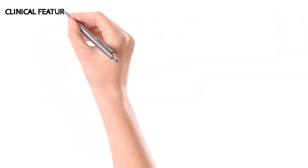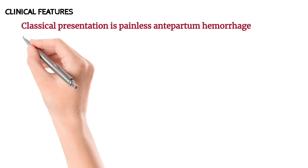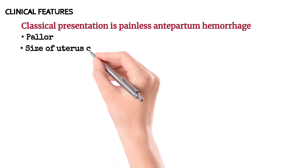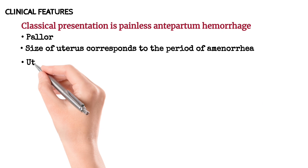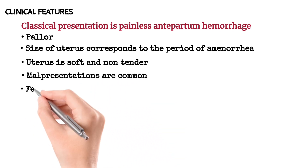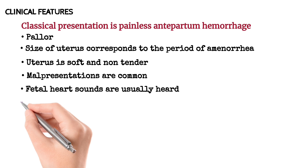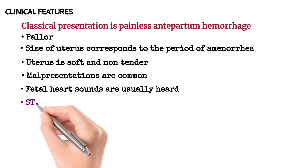The classical presentation of placenta previa is painless antepartum hemorrhage. An important word of caution: in placenta previa you will find painless bleeding, whereas in abruptio placenta you will find painful bleeding. Other symptoms include pallor; the uterine size corresponds to the period of amenorrhea; the uterus is soft and non-tender; malpresentations are very common; and fetal heart sounds are clearly heard. Note that fetal heart rate distress is the more common presentation in abruptio placenta, whereas in placenta previa fetal heart sounds are usually heard clearly.